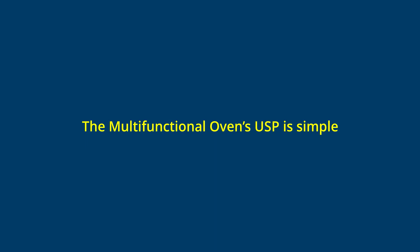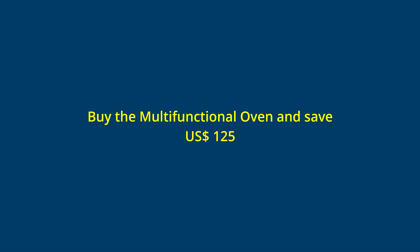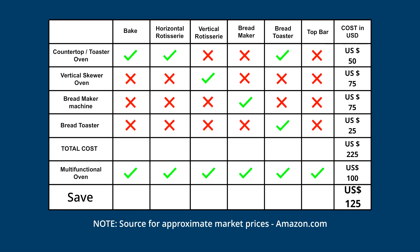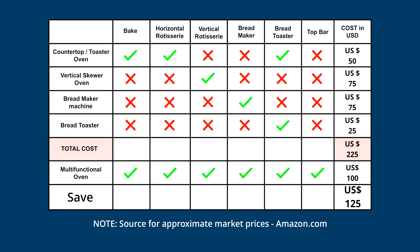The multifunctional oven's USP is simple. Buy the multifunctional oven and save 125 US dollars. Don't believe it? Look at the chart. All the features of different ovens are available in the multifunctional oven at half the cumulative price. The total cost of various ovens adds up to 225 US dollars. The multifunctional oven costs only a hundred dollars. In short, you save a hundred and twenty-five dollars.